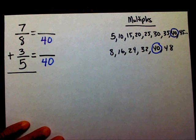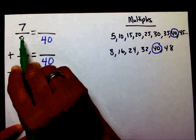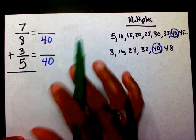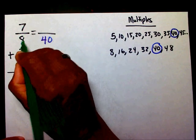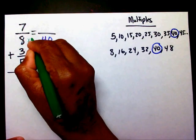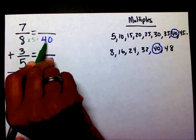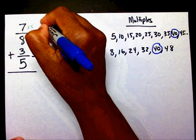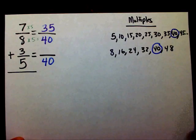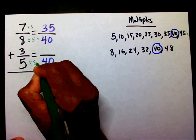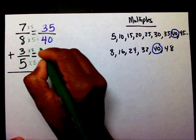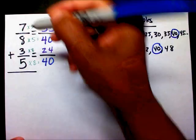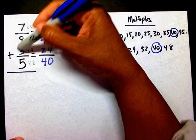Now that I have my new denominator, I need to find a new numerator. If you've never watched the video on equivalent fractions, please watch that video. I know that eight times five is forty. Whatever I multiply on the bottom, I need to multiply on the top. Seven times five is thirty-five. Five times eight is forty, and three times eight is twenty-four. I've created equivalent fractions.